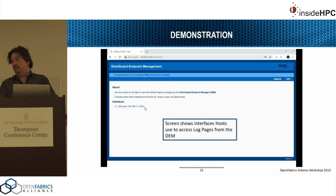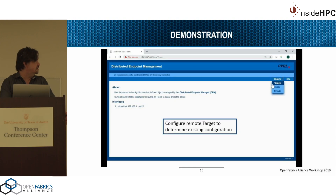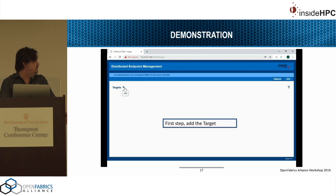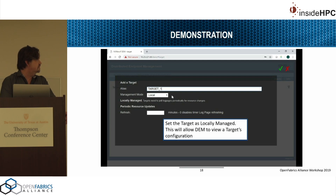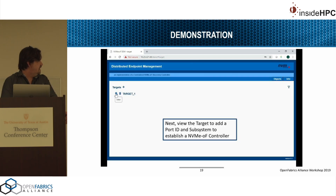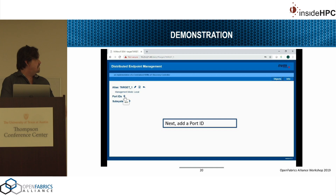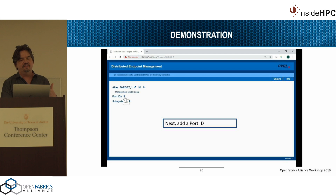We're going to change that target to be administered out-of-band, which will enable the administrator to push a new configuration. We go to the targets object, create a new target, name it, give it an alias, and set it as locally managed. To access that target, you have to add port IDs and subsystems and create a full controller on the administrative console — an artifact of the current implementation. You need to know a priori what your target is and how to reach it; in this case, it's an RDMA IPv4 target with a given address.